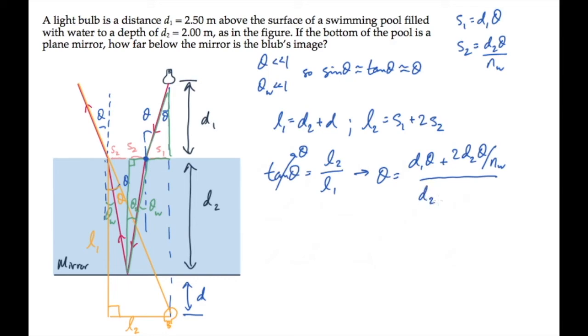There's a theta in every term, so we can cancel them. And solve for the distance d, the image distance below the mirror. That works out to d1 plus the quantity 2 over index of water minus 1 times d2.